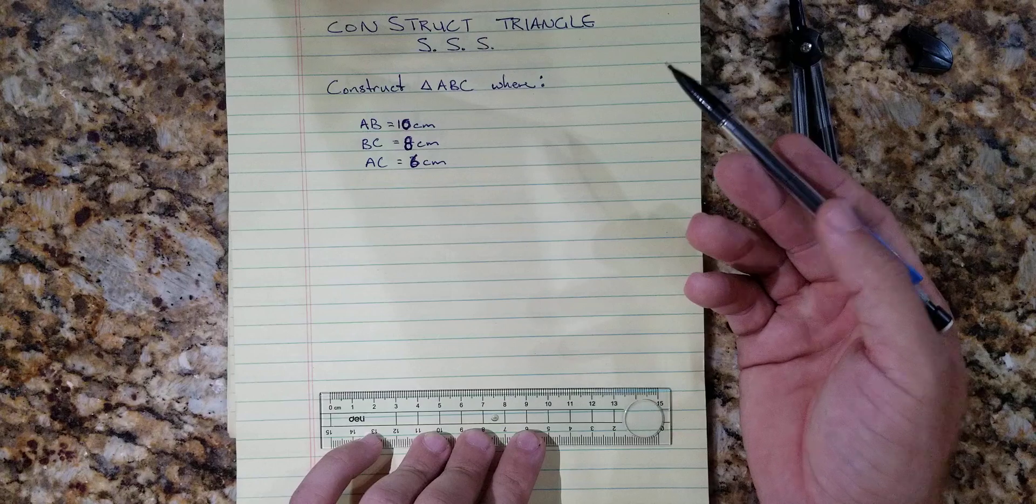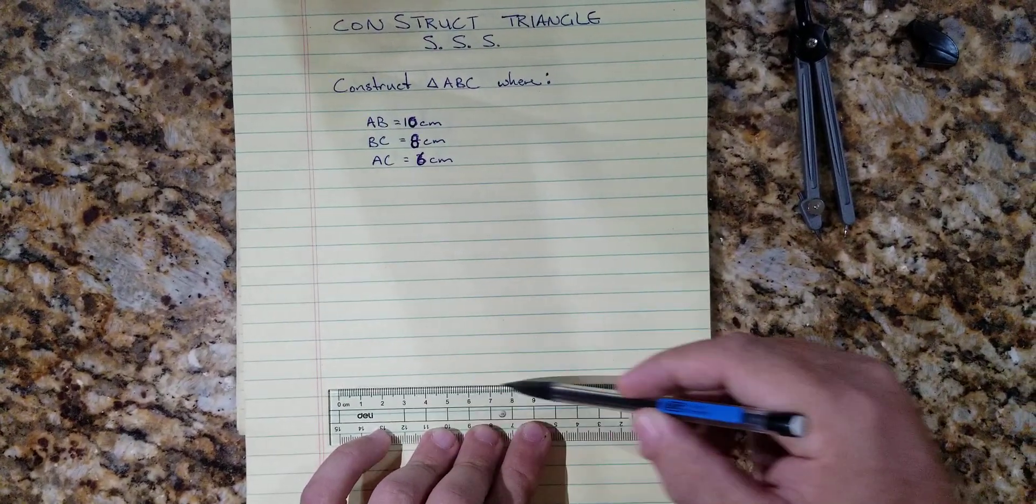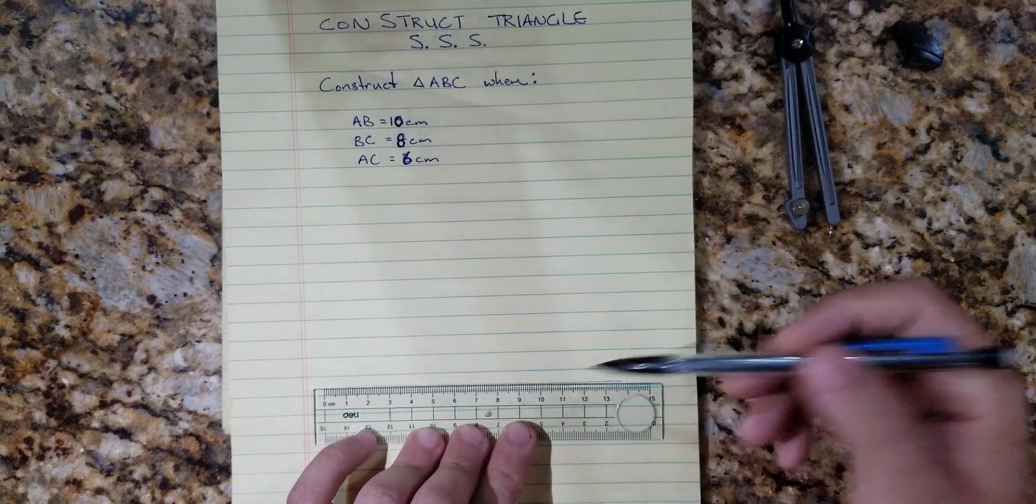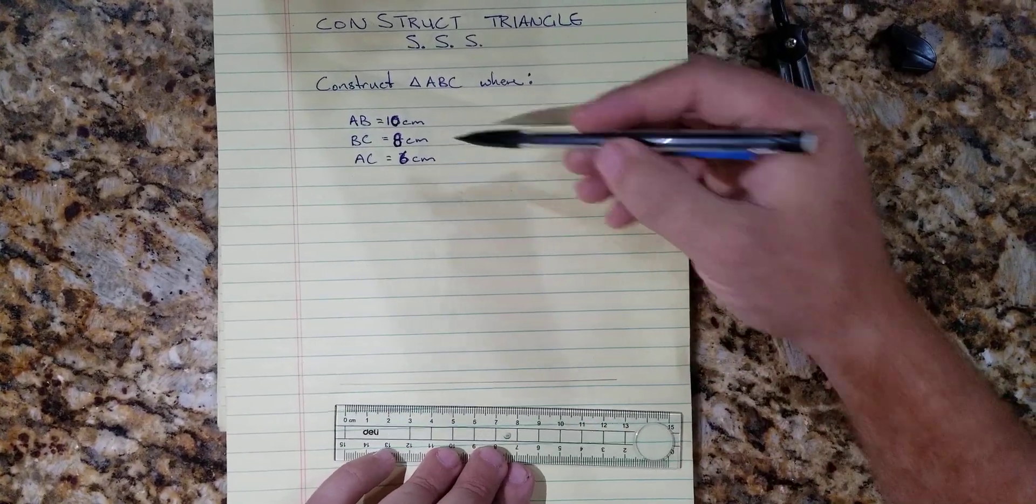So length AB: we draw our baseline and from our baseline we're going to measure our first 10 centimeters.